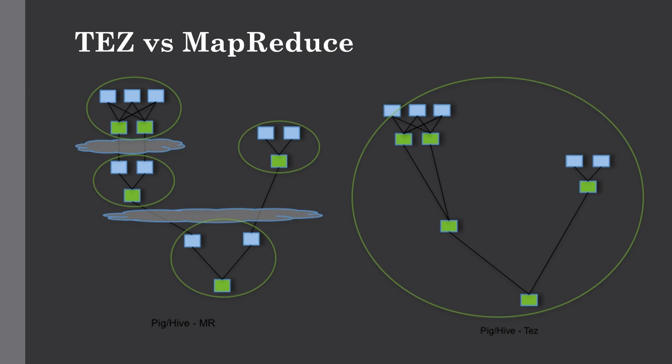You don't need to do any coding to use Tez with your Hive scripts. You just need to do some configuration and enable Tez support from the Hive shell. If you're submitting jobs through Ambari, you have an option to submit through Tez instead of MapReduce - by default it will use MapReduce as your processing engine. We are going to submit the same Hive queries using both processing engines and compare the execution times.